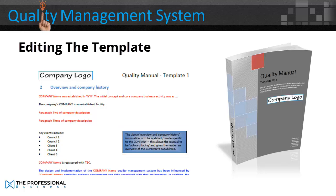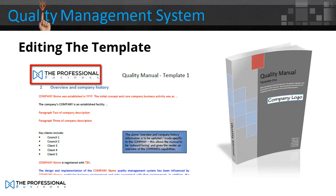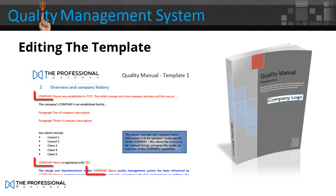The first thing you want to do is brand it specifically for your company. Just change the image file that says Company Logo for your own logo. You can then change where it says Company Name for your company by using the Find and Replace function in Word.